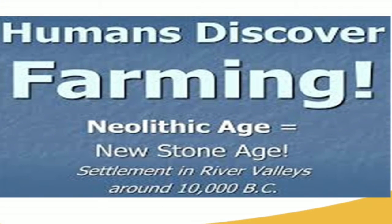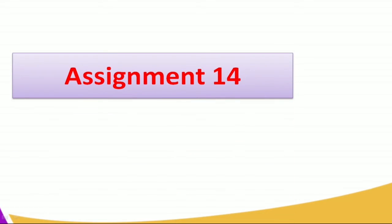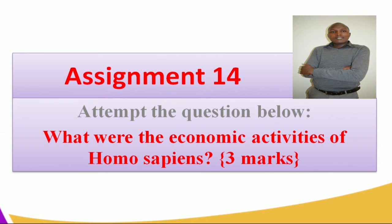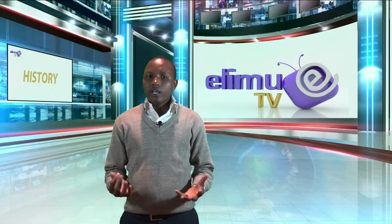As we conclude, humans discovered farming during the Neolithic age — also known as the New Stone Age period. They settled in river valleys around 10,000 BC, and this is when farming was invented during the Neolithic period. This brings us to the end of today's lesson. For your assignment: what were the economic activities of Homo sapiens? For more information, find us on Twitter at Elimu_ke or our Facebook page at Elimu TV.